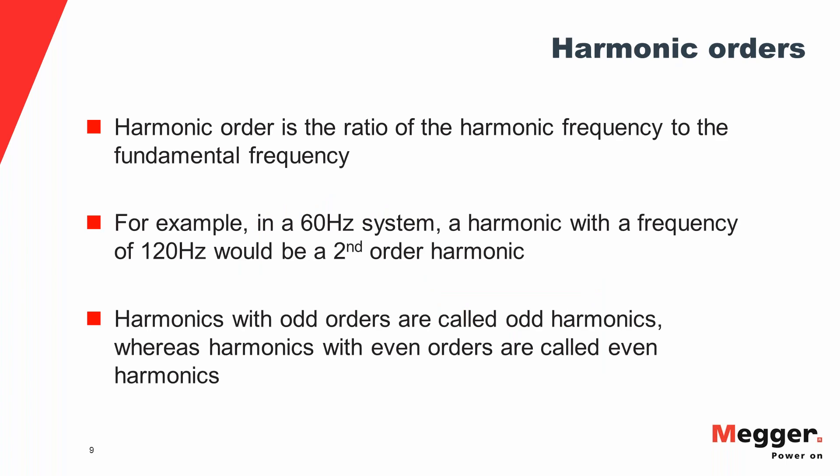On the previous slide it said 20% third harmonic and 20% fifth harmonic. Third and fifth are called harmonic orders. Harmonic order is the ratio of the frequency of the harmonic to the fundamental frequency. A third harmonic means the frequency is three times the fundamental — 180 Hz for a 60 Hz system. Fifth harmonic is five times 60, which is 300 Hz. Frequencies with odd orders are called odd harmonics — third, fifth, seventh, ninth, eleventh — and harmonics with even orders — second, fourth, sixth, eighth, tenth — are called even harmonics.